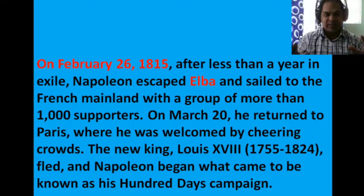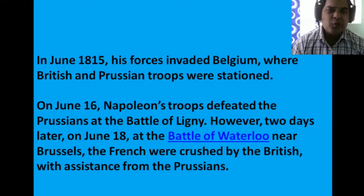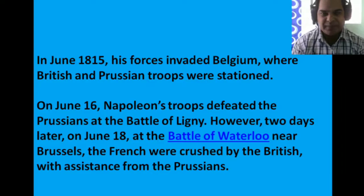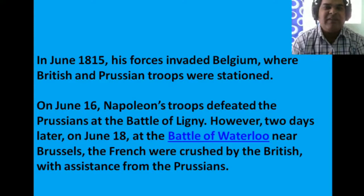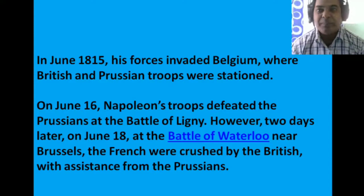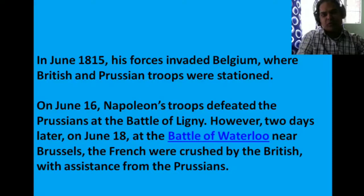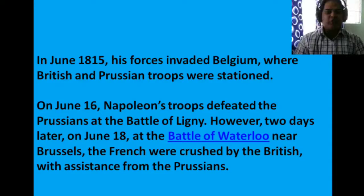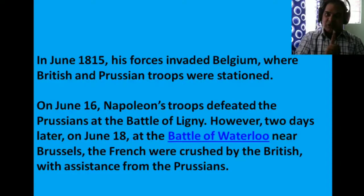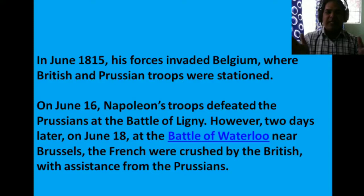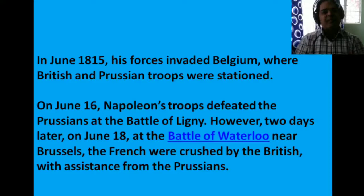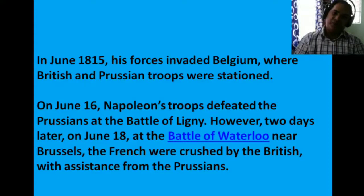In June 1815, Napoleon's forces invaded Belgium, where British and Prussian troops were stationed. On June 16, Napoleon's troops defeated the Prussians at the Battle of Ligny. However, two days later on June 18, at the Battle of Waterloo near Brussels, the French were crushed by the British with assistance from the Prussians, and Napoleon was completely defeated.